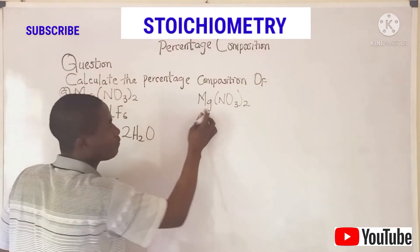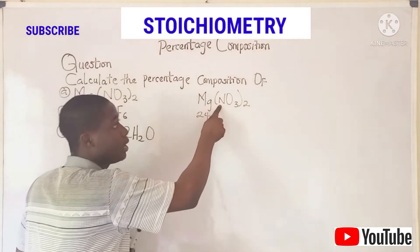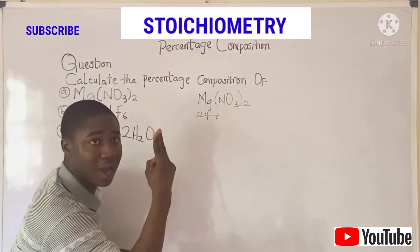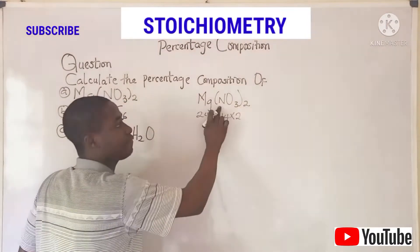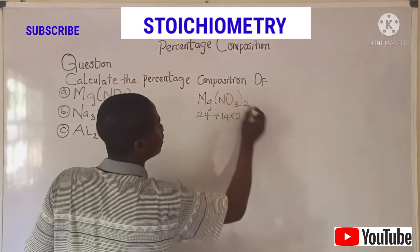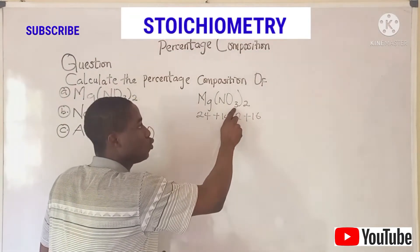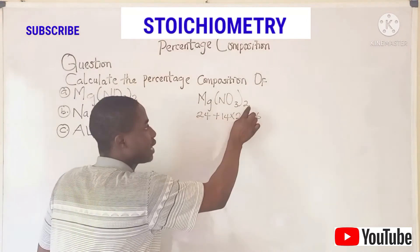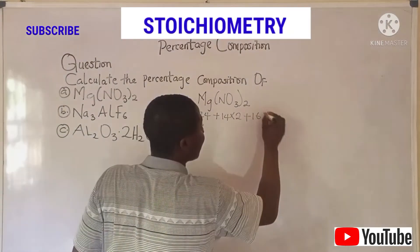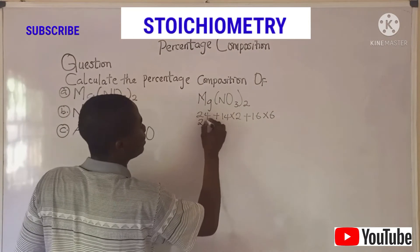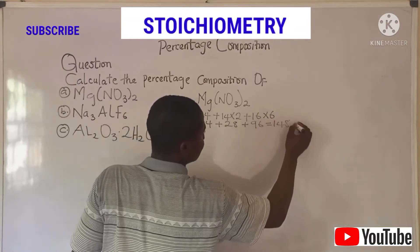What is the atomic mass of magnesium? 24. Plus, what is the atomic mass of nitrogen? It is 14, but we have two atoms of nitrogen, so it becomes 14 times 2, because this 2 is affecting everything inside the bracket. What is the atomic mass of oxygen? 16. But here we have 6 atoms — 3 times 2 — because this 2 is affecting oxygen and 3 is affecting oxygen, giving us 6 atoms of oxygen, so 16 times 6.